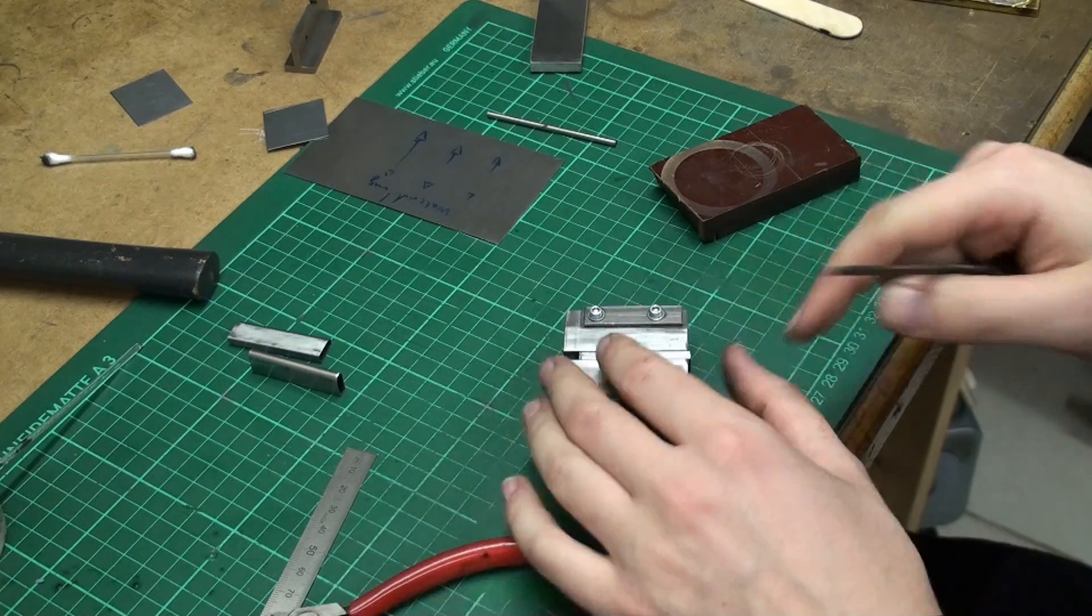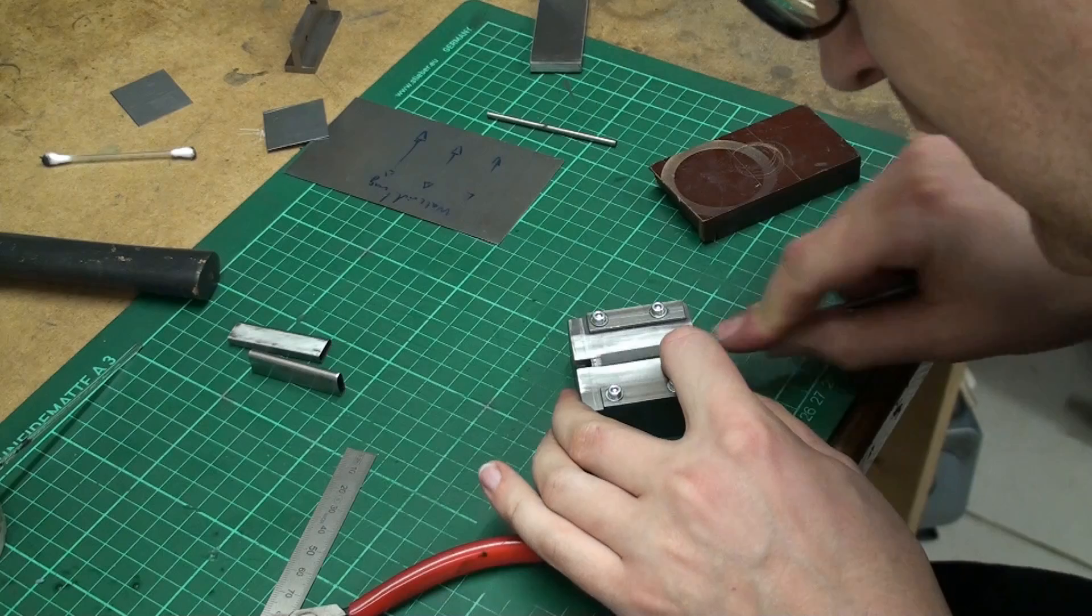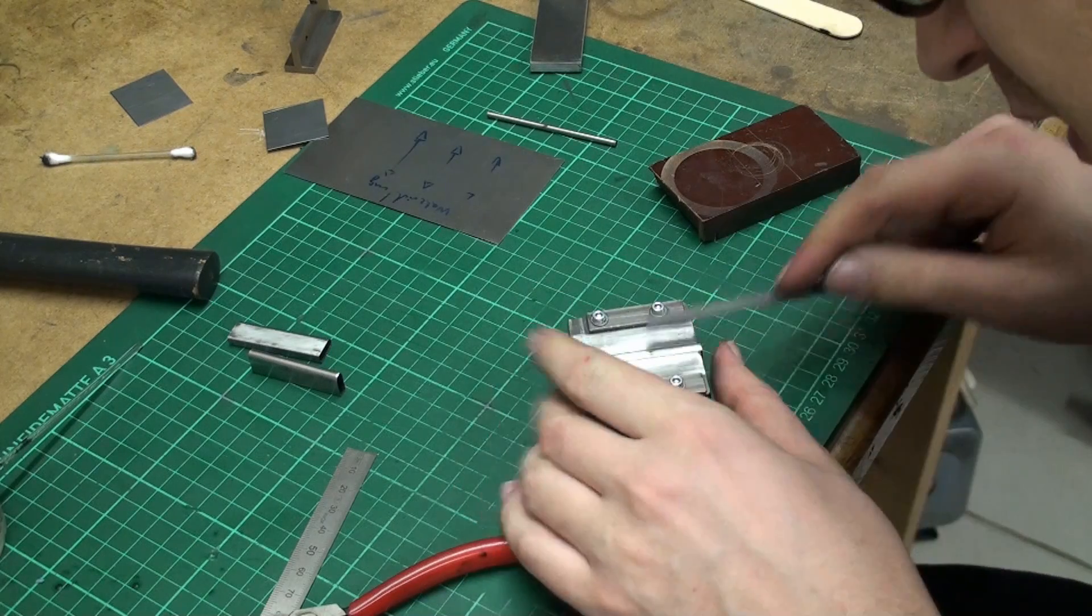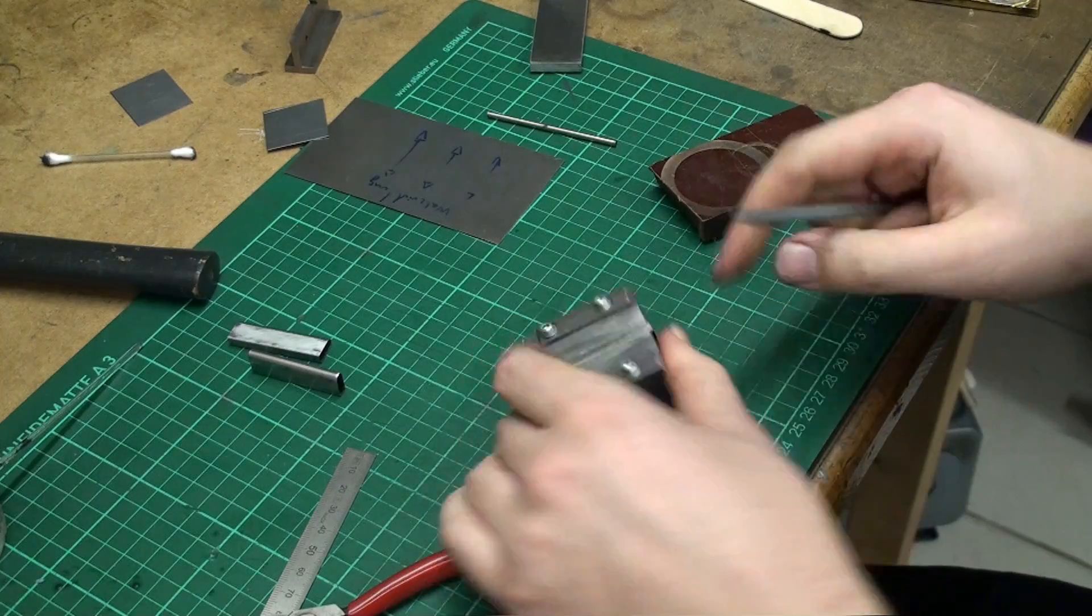Okay, I'm just dressing down the weld with a Jules file before I remove it from the press or forming tool.